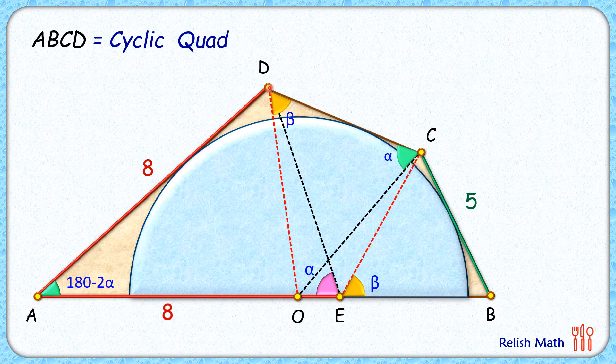Again from point D two tangents are drawn, DA and DC. By theorem, if we join from center O to point D it will bisect this angle. So if this angle is beta degrees, then this remaining angle will also be beta degrees.